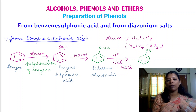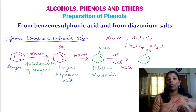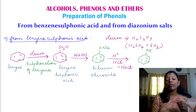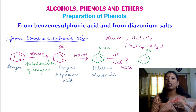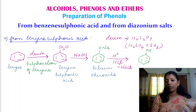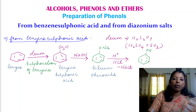To summarize method one: we take benzene and treat it with oleum (H2S2O7) to get benzene sulfonic acid by sulfonation. This benzene sulfonic acid is treated with sodium hydroxide to get sodium phenoxide, which on further acidification gives us phenol.